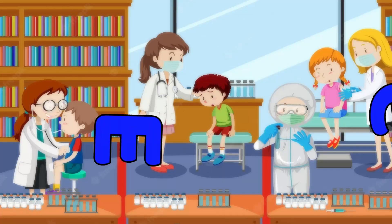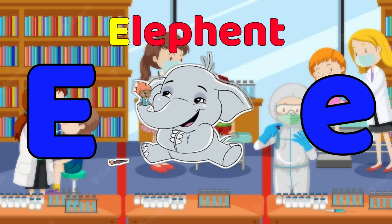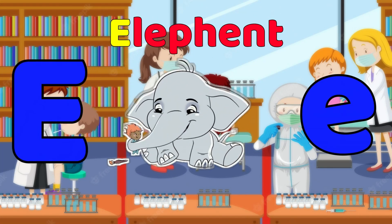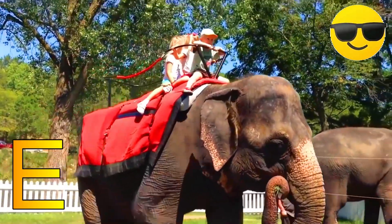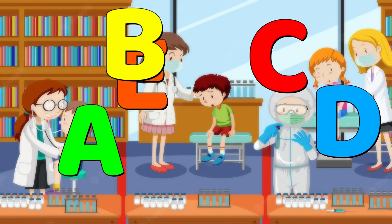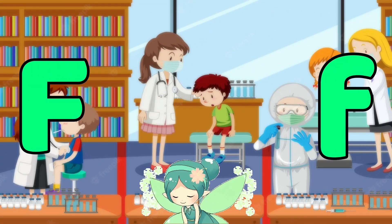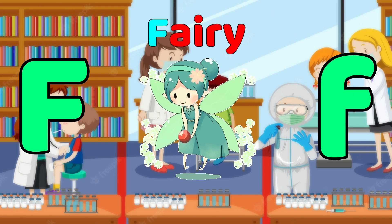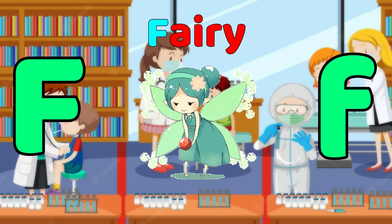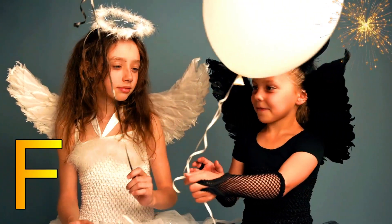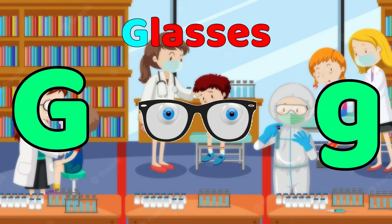E is for Elephant. E, E, Elephant. E, E, Elephant. E, Elephant. F is for Fairy. F, F, Fairy. F, F, Fairy. F, Fairy.